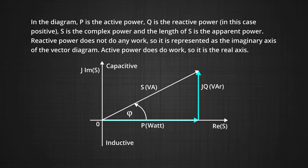Here, we can see this power how it can be represented in the phase diagram. In this diagram, P is active power, Q is the reactive power, that is in this case it is positive. S is the complex power and the length of S is the apparent power. Reactive power does not do any work, so it is represented as the imaginary axis of the vector diagram. Active power does do work, so it is the real axis.